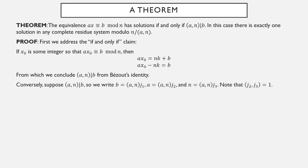Conversely, suppose the GCD of a and n is a factor of b. Then we need to show solutions exist. We can write b = GCD · j₁, a = GCD · j₂, and n = GCD · j₃. Because this was the greatest common factor of a and n, we also know that j₂ and j₃ are relatively prime. We don't get to make a corresponding assumption about j₁ — the GCD is a factor of b, but it might not be the largest common factor of all three numbers.